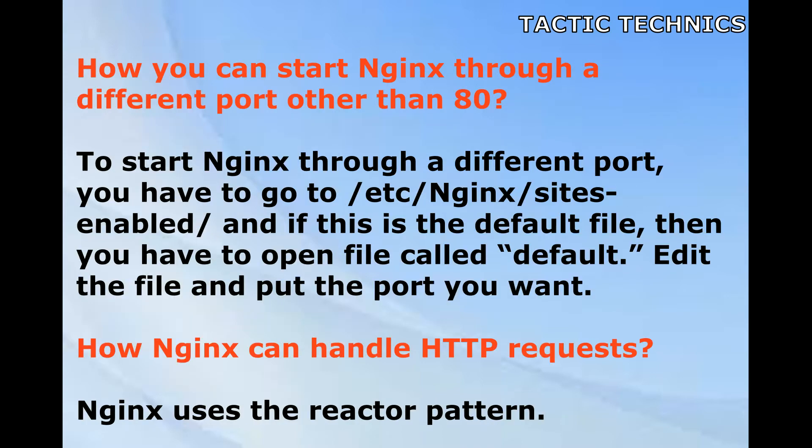How can you start Nginx through a different port other than 80? To start Nginx through a different port, you have to go to /etc/nginx/sites-enabled/ and if this is the default file, then you have to open the file called default. Edit the file and put the port you want.